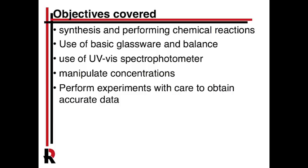This lab covers a lot of different objectives. First, you're going to be doing a chemical reaction — that's the main thing. But you're also going to be doing things we've done before: we're going to use Beer's Law, which is a concentration-based calculation, use the UV spectrometer, determine mass, and do filtration. It's kind of a culmination of all the things we've done thus far in lab.